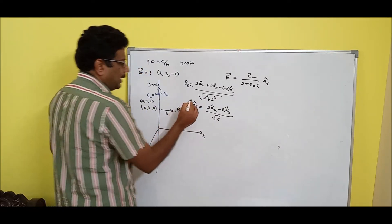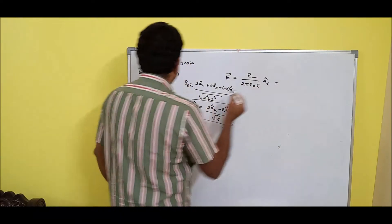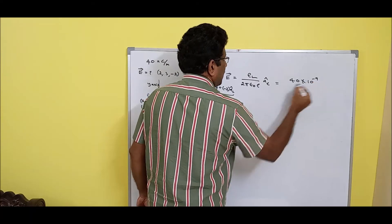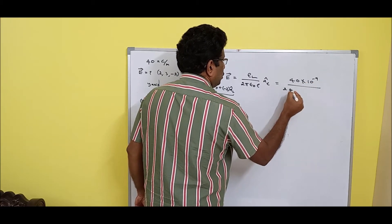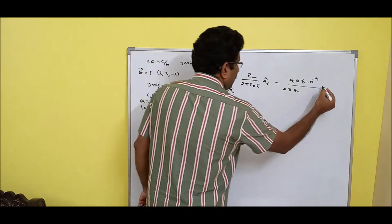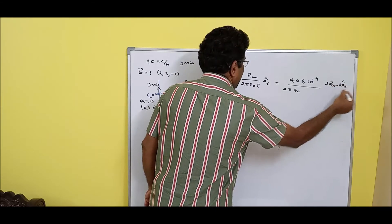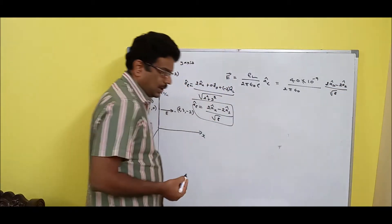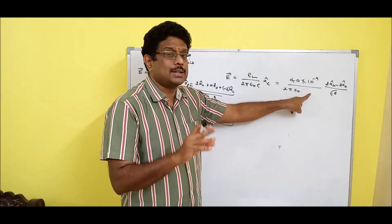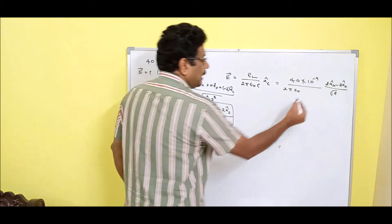So A_rho_cap = (2 A_x_cap - 2 A_z_cap) divided by root(8). We are ready with the unit vector. Now substitute: rho_L is 40 nano = 40 × 10⁻⁹. The formula is E = rho_L divided by (2 pi epsilon_0 rho) times A_rho_cap, where rho (the distance) is root(8). Note that in this formula it is rho, not rho squared.